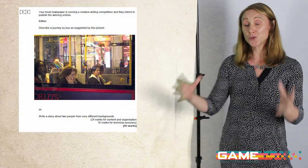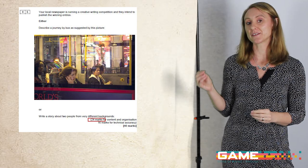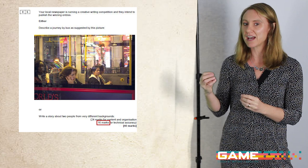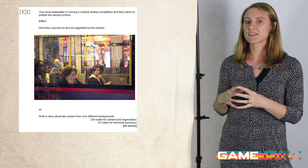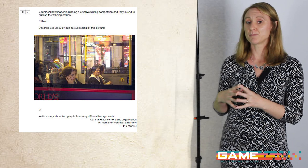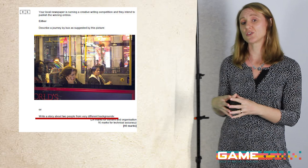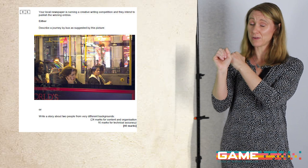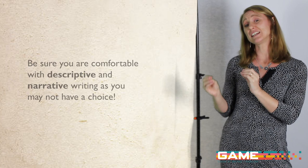So you've made it to the last question: question five. This is worth 40 marks — half of the marks for the whole paper. That's broken down as 24 for content and organisation and 16 for technical accuracy, so be really careful with your spelling and show off all the different punctuation you can use. You're going to be asked to create a longer piece of creative writing. It could be based on an image, or you'll be given a statement, and you can choose which one you want to do. You need to be confident with both descriptive and narrative writing, as you may not always get a choice.